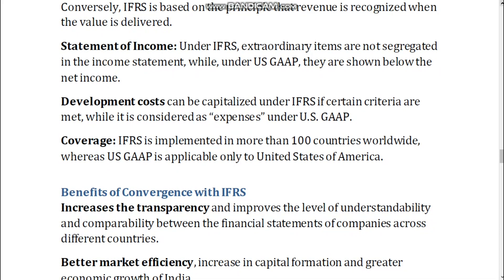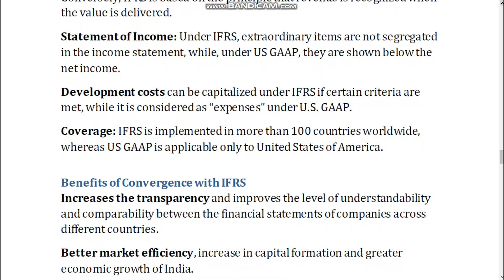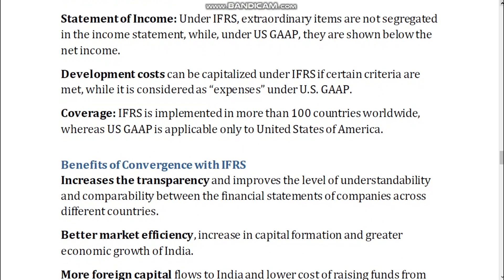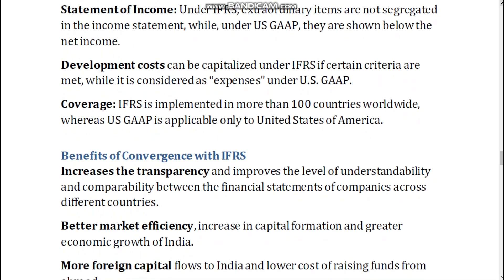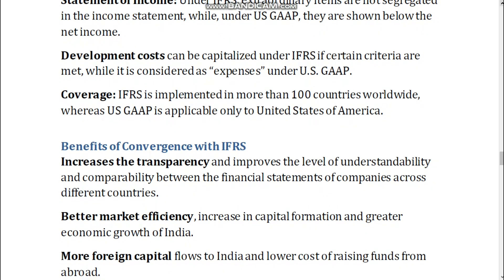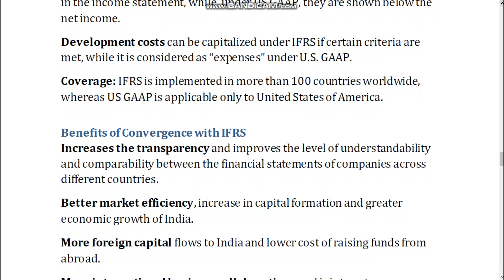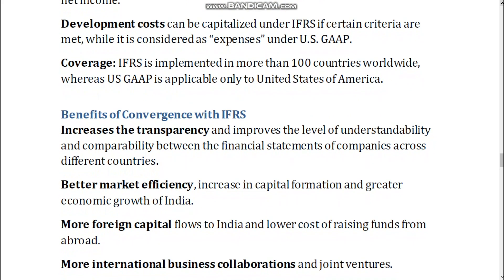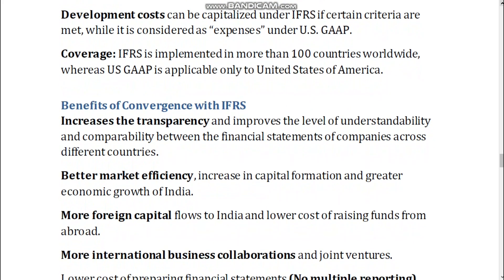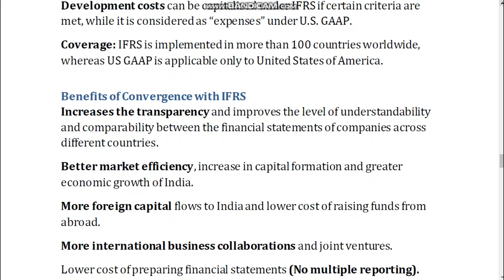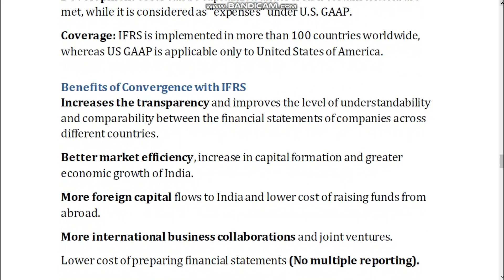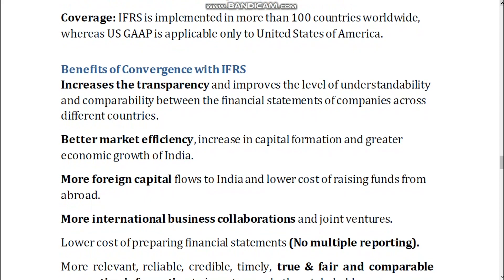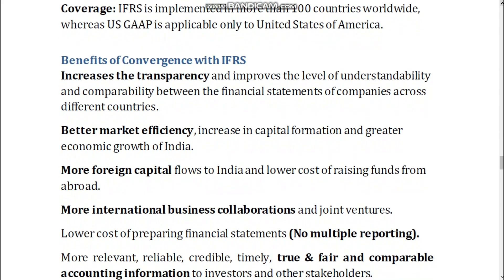Statement of Income: under IFRS, extraordinary items are not segregated in the income statement, while under US GAAP, they are shown below the net income. Development costs can be capitalized under IFRS if certain criteria are met, while they are considered as expenses under US GAAP. Coverage: IFRS is implemented in more than 100 countries worldwide, whereas US GAAP is applicable only to the United States of America.